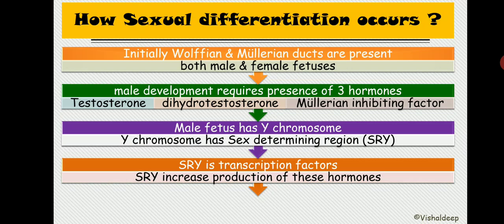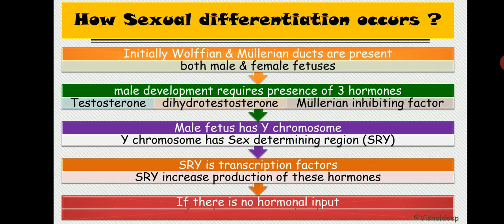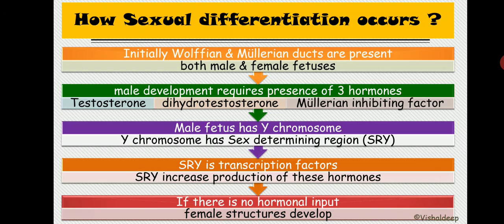If SRY is absent, no transcription occurs, no hormones are produced, and female structures develop. The factory default of every fetus is to become female. Only the presence of the Y chromosome and SRY triggers male development. Absence of the Y chromosome or SRY — or failure of hormone production — results in female development.